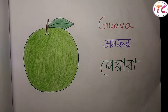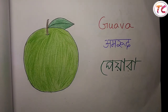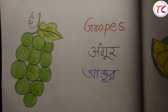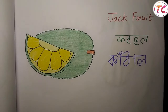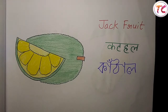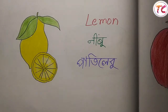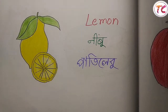Guava — amrood — পেয়ারা. Grapes — angur — আঙুর. Jackfruit — kathal — কাঁঠাল. Lemon — nimbu — পাতিলেবু.